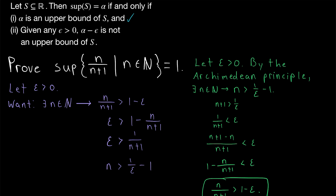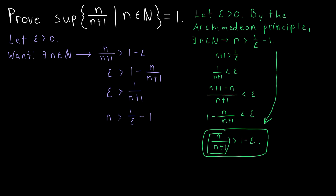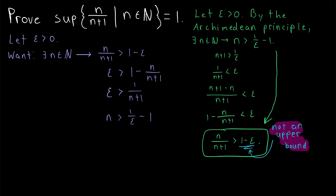Recall the second condition of the supremum definition: given any positive epsilon, subtracting epsilon from 1 should not be an upper bound of our set. We just showed we can take any arbitrary positive epsilon, and by the Archimedean principle there exists a natural number n greater than 1 over epsilon minus 1. That natural number satisfies n over n plus 1 is greater than 1 minus epsilon. Since n over n plus 1 is an element of the set — our set contains all elements of that form for any natural number — 1 minus epsilon is not an upper bound.